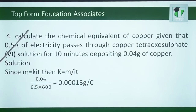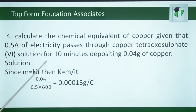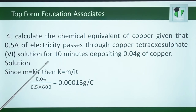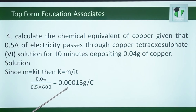Number 4. Calculate the chemical equivalent of copper, given that 0.5 amperes of electricity passes through copper tetrahydrate sulfate solution for 10 minutes, depositing 0.04 grams of copper. We know that M equals KIT, meaning K equals M divided by IT. Converting time to seconds, we have 0.04 divided by 0.5 times 600 to give us 0.00013 grams per coulomb.